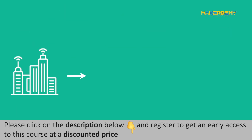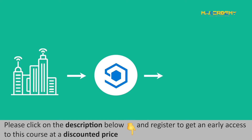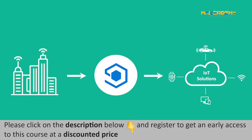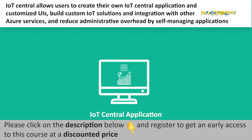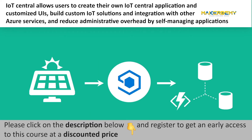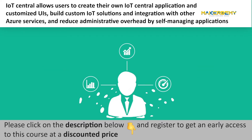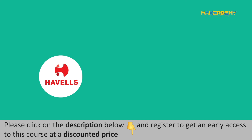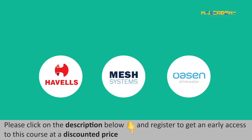IoT companies use Azure IoT Central to build powerful IoT solutions quickly and in a cost-effective manner. IoT Central allows users to create their own IoT Central application and customized UIs, build custom IoT solutions and integration with other Azure services, as well as reducing administrative overhead by self-managing applications. Some companies that use Azure IoT Central include Havels India Limited, Mesh Systems, and OASIN.